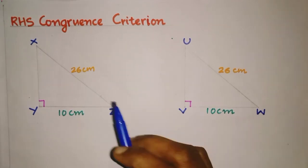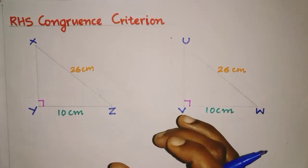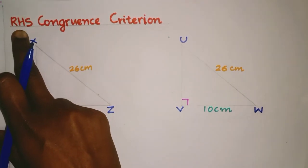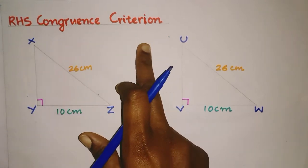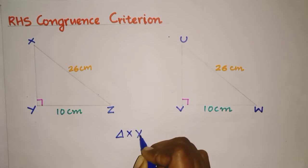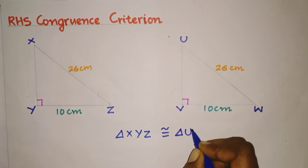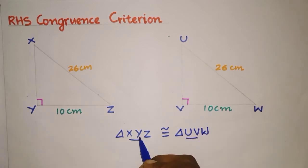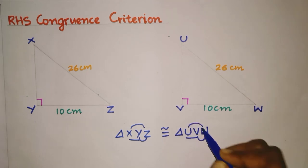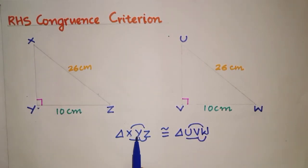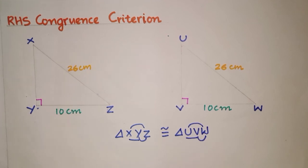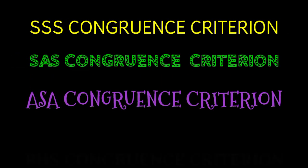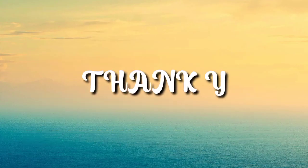RHS congruence criterion. It is applicable only for right-angled triangles — right angle, hypotenuse, side. Here triangle XYZ is congruent to triangle UVW because XY equals UV, YZ equals VW, and angle XYZ equals angle UVW. So these two triangles are congruent under the RHS congruence criterion.